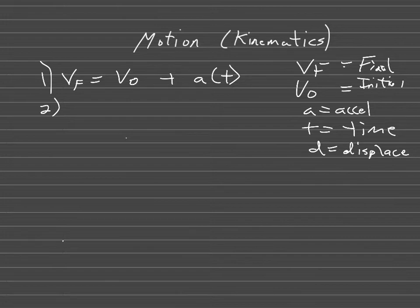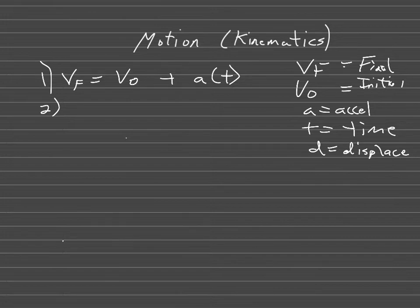Those are the five things that are part of all these equations. However, each equation only has four of these variables — that's why we have multiple equations. No single equation has all five variables, so you have to pick which equation to use depending on what information the problem gives you.